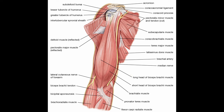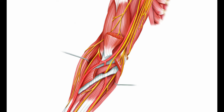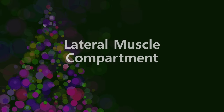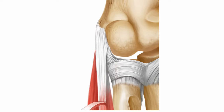The distal biceps tendon begins about 7 cm above the elbow joint, forming a flattened tendon that lies superficially and inserts on the radial tuberosity. Behind the biceps, the brachialis muscle covers the anterior joint capsule. The lateral muscle compartment, which extends the wrist and hand and supinates the forearm, originates at the lateral epicondyle, where the extensor carpi radialis brevis tendon attaches anteriorly and the common extensor tendon posteriorly. These tendons, often implicated in tennis elbow, blend and cannot be discretely separated.